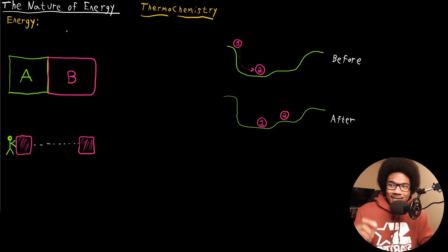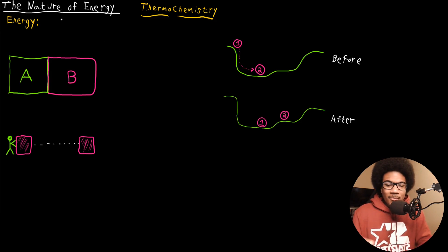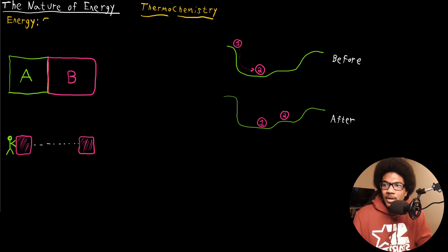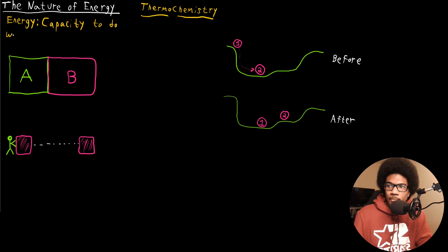What is energy? If we're going to give a formal definition, energy is the capacity for a system to do work or produce heat. So energy is the capacity to do work or produce heat.